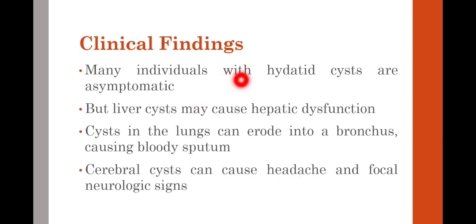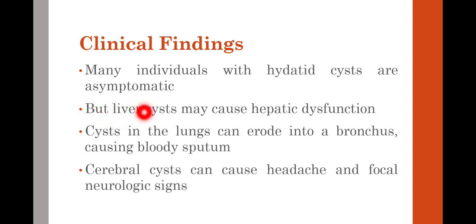Regarding clinical findings, many individuals with hydatid cysts are asymptomatic during initial infection because the cyst is confined and small. However, as it slowly grows, it creates pressure on surrounding organs. The symptoms depend on the site of the cyst. For example, if the cyst is in the brain, the pressure on surrounding tissue results in detrimental changes and clinical symptoms. Initially the hydatid cyst is asymptomatic, but later it presents with clinical symptoms depending on where the cyst is located.